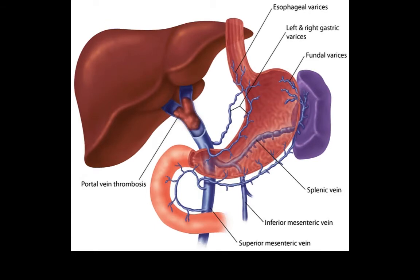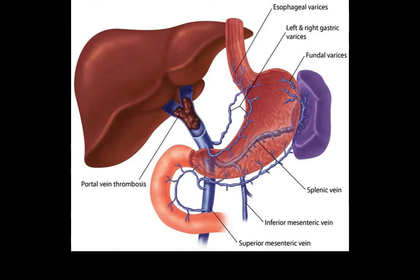In portal vein thrombosis, there is obstruction by a clot. Blood is prevented from reaching the liver. As a result, reversal of flow develops and sites of portosystemic anastomosis become congested.